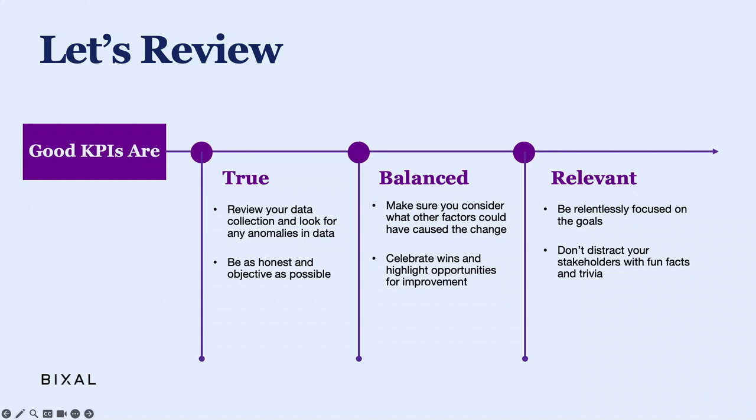That leads us to number two: KPIs that are balanced. As you're evaluating your hypothesis, ask yourself: what else could have caused this change? This approach helps us see clear opportunities for improvement. When we fail and when we succeed, we can own it and replicate it.